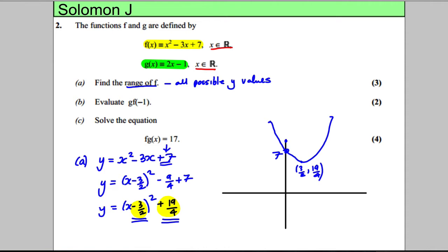So that really helps us work out the range because the range is all possible y values. So you can see the range here: the y numbers can take any value from infinity down to 19 over 4 and back up to infinity. So therefore the range f(x) is bigger than or equal to 19 over 4, and we're done.